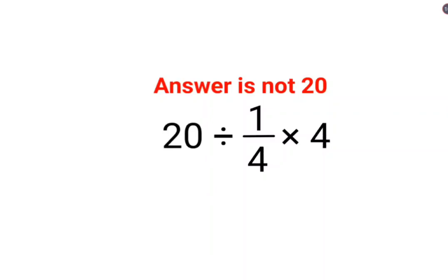Welcome everyone. A lot of people thought that the answer for this one is supposed to be 20 because this is cancelling. 1 by 4 multiplied by 4 gets cancelled. So you are left with just 20 divided by 1. The answer for that is 20.